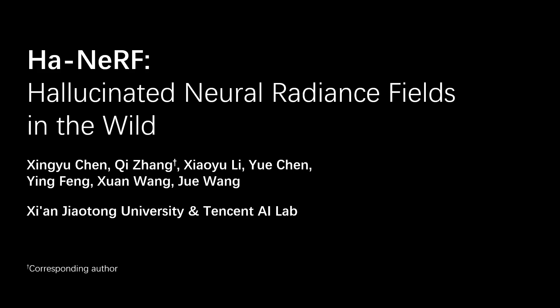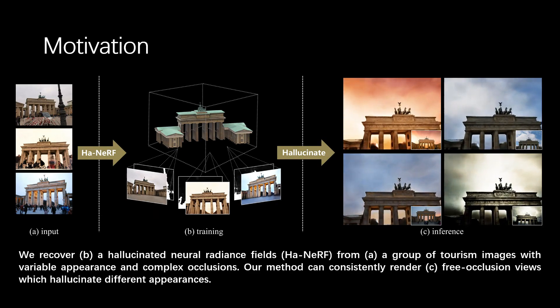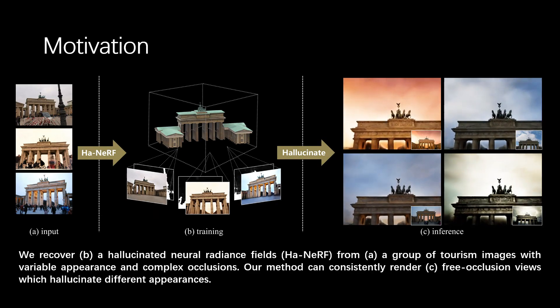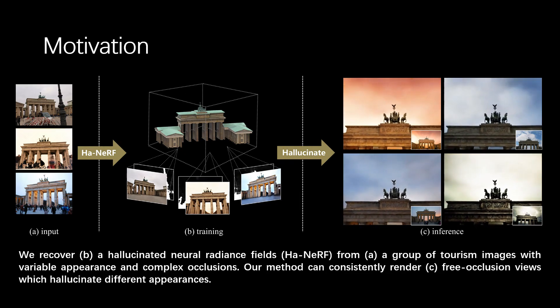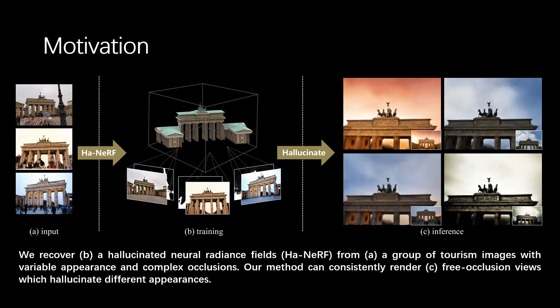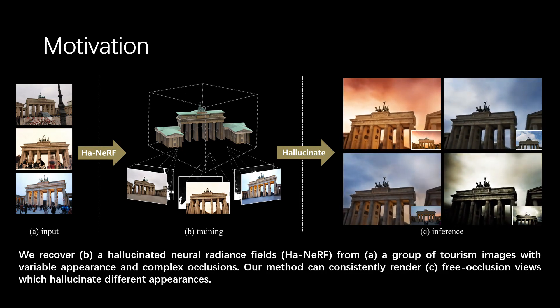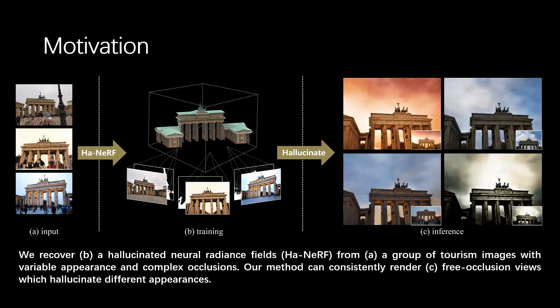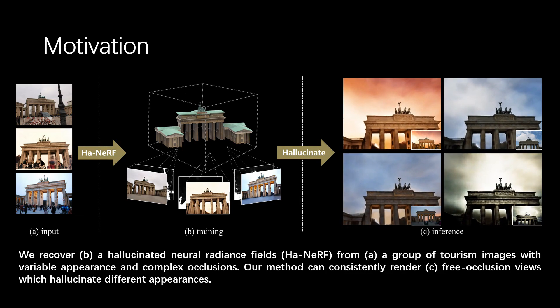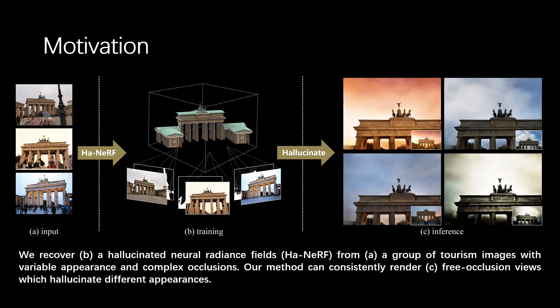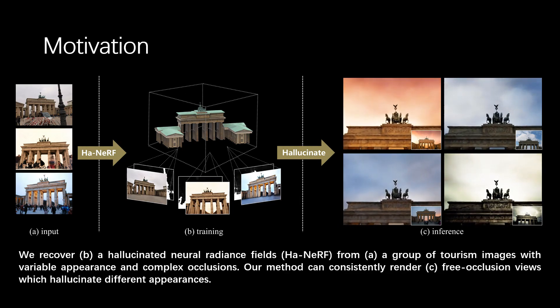It's an extension of neural radiance fields and can be used to recover a realistic NeRF at different appearances. We recover HA-NeRF from a group of tourism images with variable appearance and complex occlusions, then render free-occlusion views and hallucinate appearances from user-provided example images.